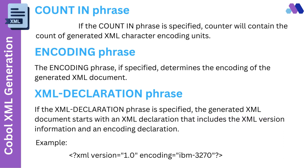If the Count In phrase is specified, the counter will contain the count of generated XML character encoding units — in simple terms, the length of the output XML generated. The Encoding phrase, if specified, determines the encoding of the generated XML document. If the XML Declaration phrase is specified, the generated XML document starts with an XML declaration that includes the XML version information and an encoding declaration.